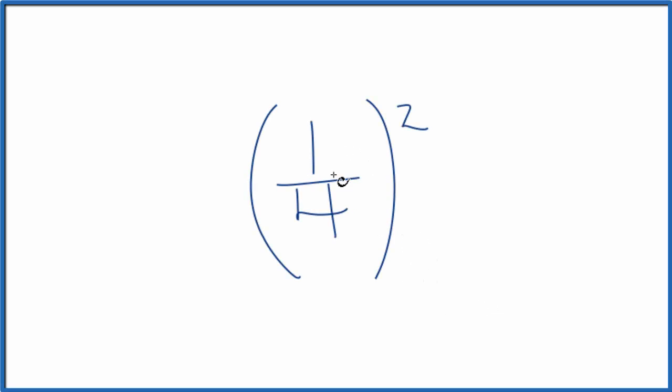If you're asked to figure out one-fourth squared, so if we're taking the square of one over four, how do we do that? There are two ways. The first way is we just reason it out. We say that...